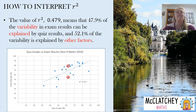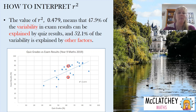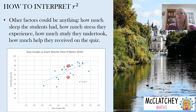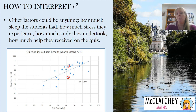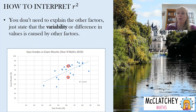To interpret R squared, remember to memorize the sentence. An R squared of 0.479 means that 47.9% of the variability in exam results can be explained by the quiz results, and the remaining 52.1% is explained by other factors. Those other factors could be anything — how much sleep students had, stress and anxiety during exams, how much study they undertook, or help from a tutor. In this case, more than 50% of results are explained by other factors, but it's not your job to work out what those are.